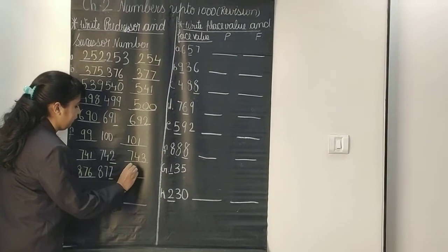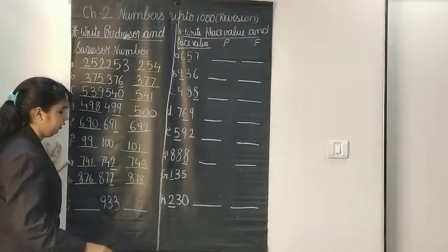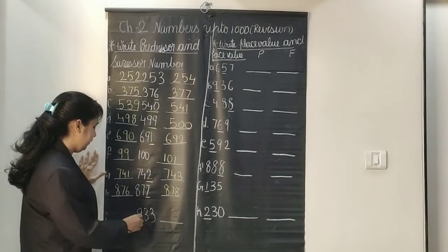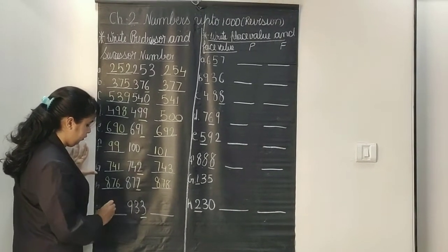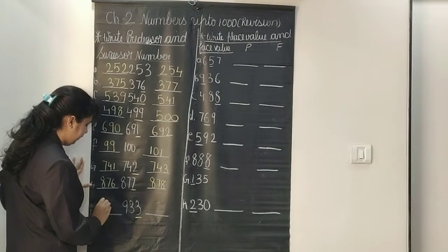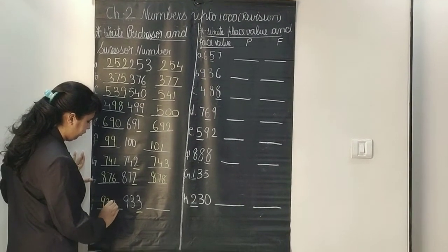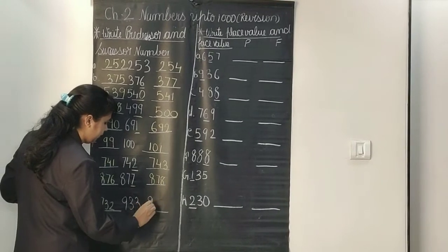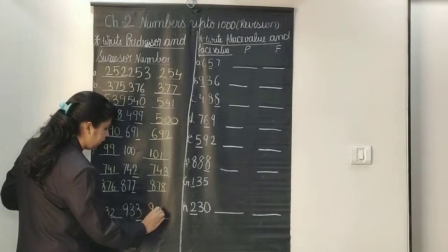The successor of 877 is 878. Now the last number is 933 — the predecessor of 933 is 932 and the successor is 934.